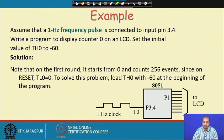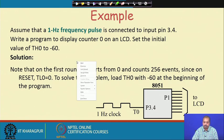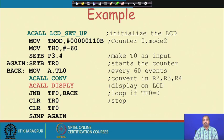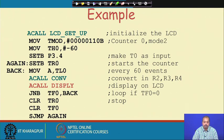We want to load TH0 with minus 60 at the beginning of the program. First, the LCD setup part initializes the LCD — we call LCD setup, which is not part of this main program. We assume there is an LCD setup routine that sets the control words for the LCD. Assuming that is already done by the LCD setup routine, we initialize counter 0 in mode 2.